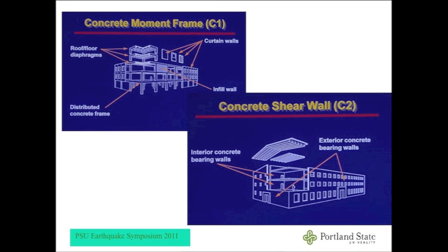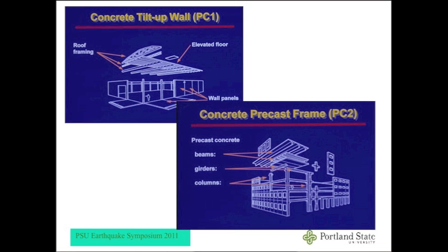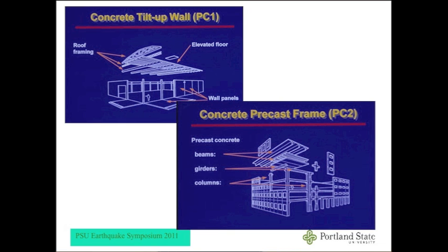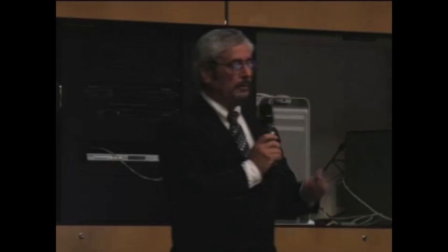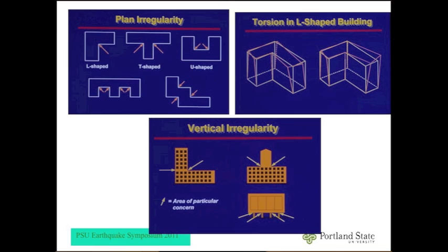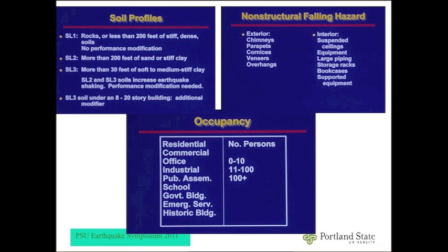ATC-21 looks at what type of building you have and what are the performance modification factors — those factors that detract from capacity and performance. We look at wood buildings, steel frames with concrete shear walls, concrete moment frames, concrete shear walls, concrete tilt-up, concrete precast, unreinforced masonry, and reinforced masonry with rebars. We also look at modification factors: are they irregular, do they have torsional components, vertical irregularities? We look at the soil profile from DOGAMI data, structural falling hazards like brick veneers and parapets, and occupancy.